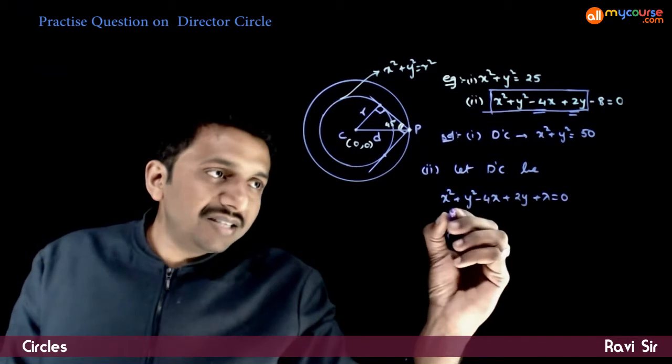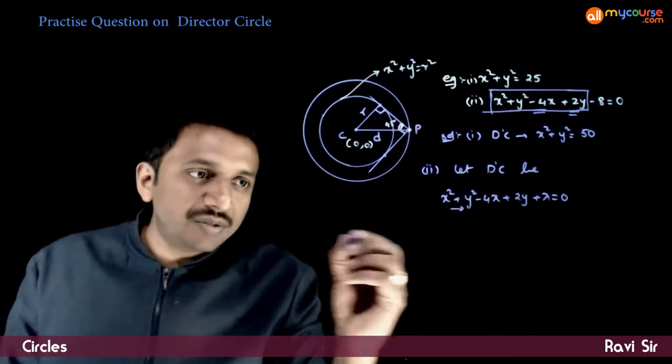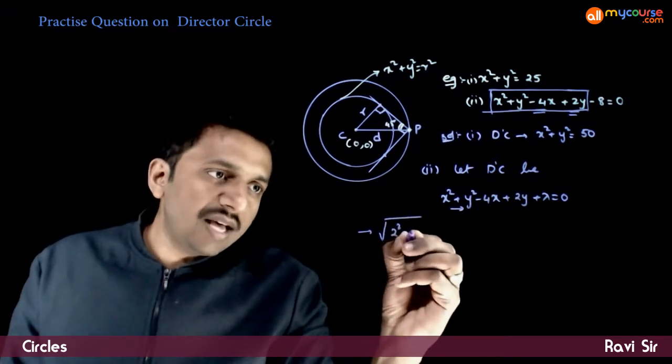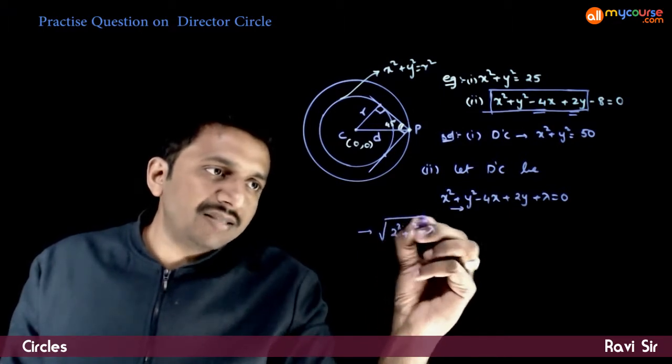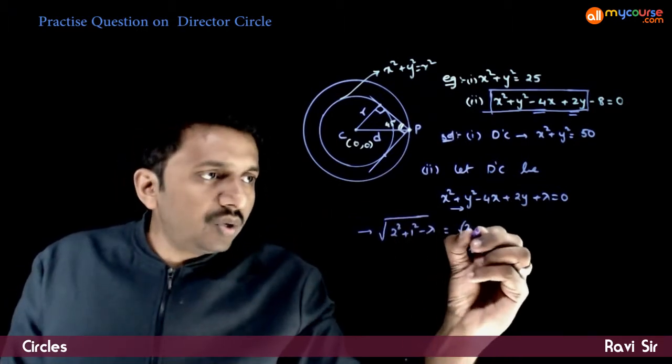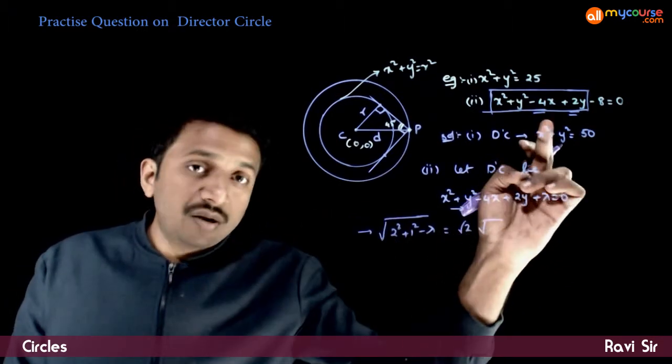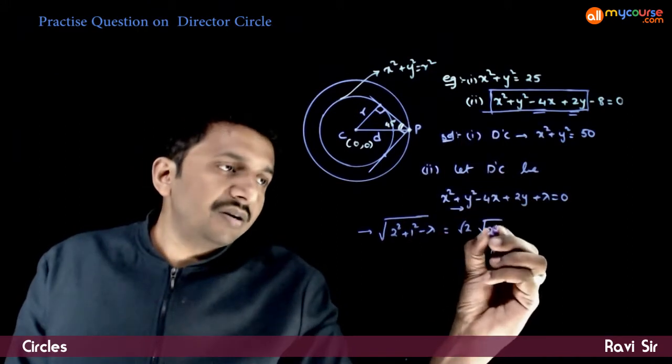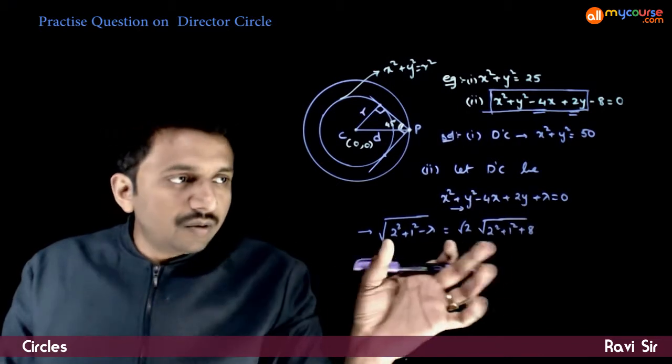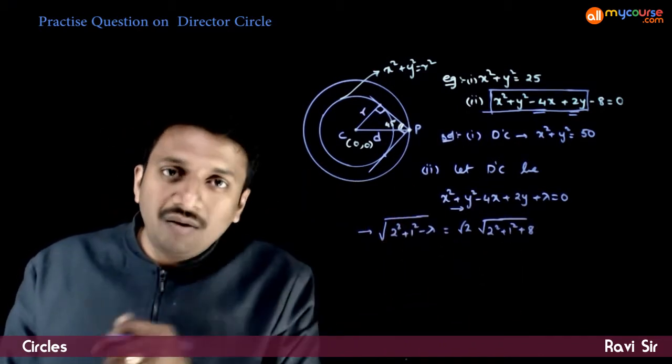Now, what is the condition that this equation has to satisfy? The radius of this, which is root of g square plus f square minus c, has to be equal to root 2 times the radius of this circle, that is 2 square plus 1 square plus 1 square plus 8. So, if you solve this equation, you get the value of lambda.